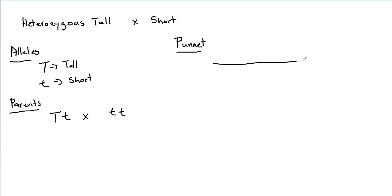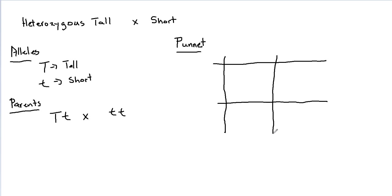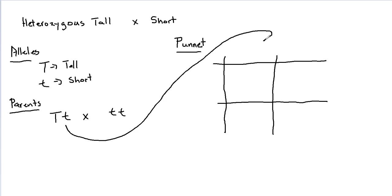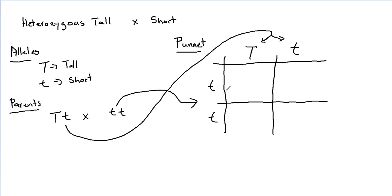Let's do a quick Punnett square here together. You're starting to get better at these — at any point you can pause this video and try to do it on your own. Create the Punnett square. Your parents are going to make their gametes — that's what's put on the side or on the top. So this parent, we're going to split off; it's only got two possible gametes: big T and little t. This parent, we'll put on the side — only one possible gamete, just the little t.